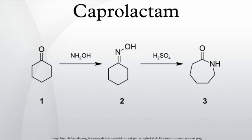Coprolactam is an organic compound with the formula C5H9NO, N-H. This colorless solid is a lactam, a cyclic amide, of coproic acid. Approximately 4.5 billion kilograms are produced annually. Coprolactam is the precursor to nylon 6, a widely used synthetic polymer.